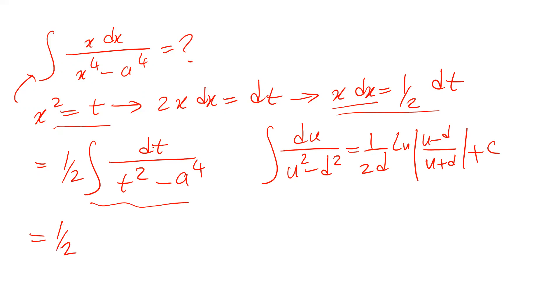Instead of, to solve basically the integral of dt divided by t² minus a⁴, I use this solution that is 1/(2d), that is 2 times d is equal to a², ln |t - d|, that is a² divided by u, in this case will be t, plus d, that is a² plus c, which is the constant of the integral.